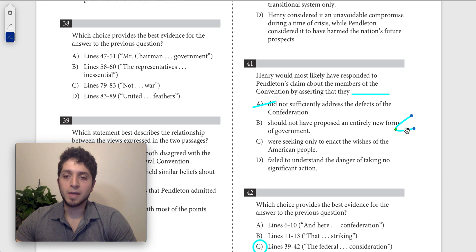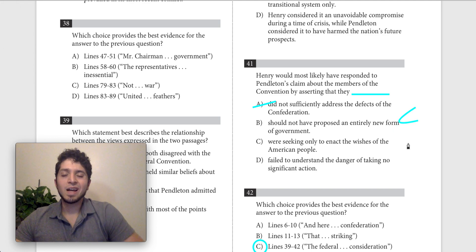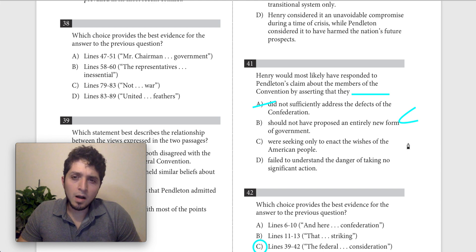C says they were seeking only to enact the wishes of the American people. I don't really think that this is how Henry would respond. They don't really talk about the wishes of the American people. If they did, I think the only thing that Henry says, he doesn't say this in any of the texts. He's not talking about the enacting of the wishes of the American people.